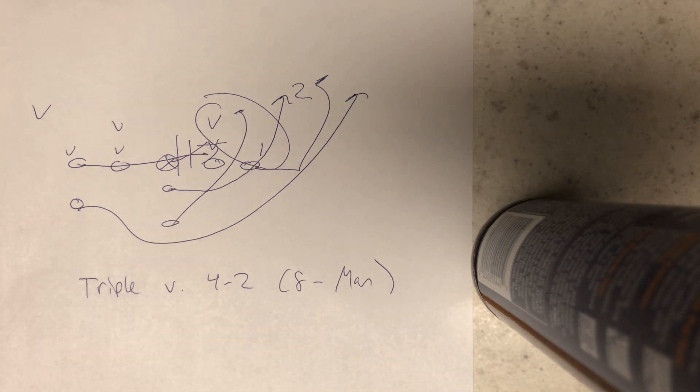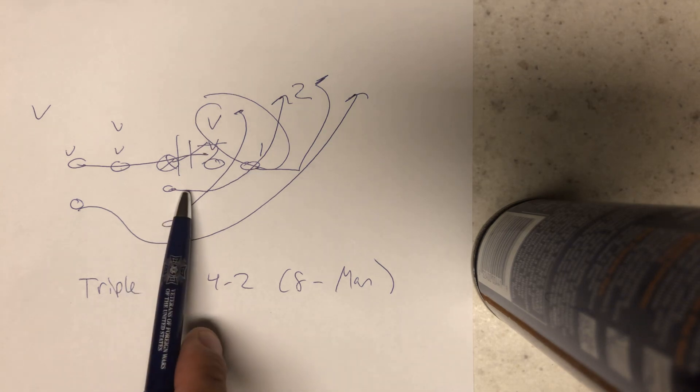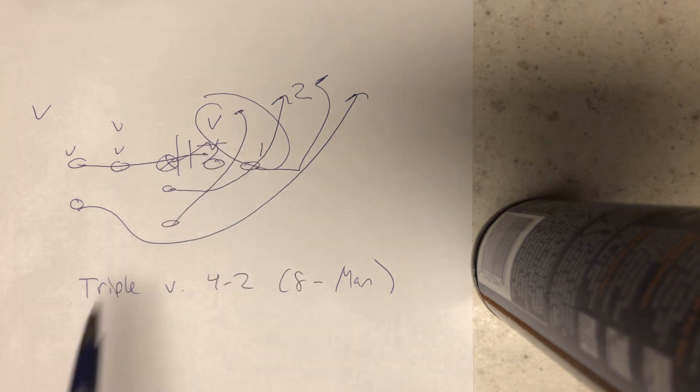The quarterback, now his process is different because there's no one to protect the B-gap, so now it's going to be a pull read. The quarterback's going to take the snap, jump in the gap, he's going to point the ball.